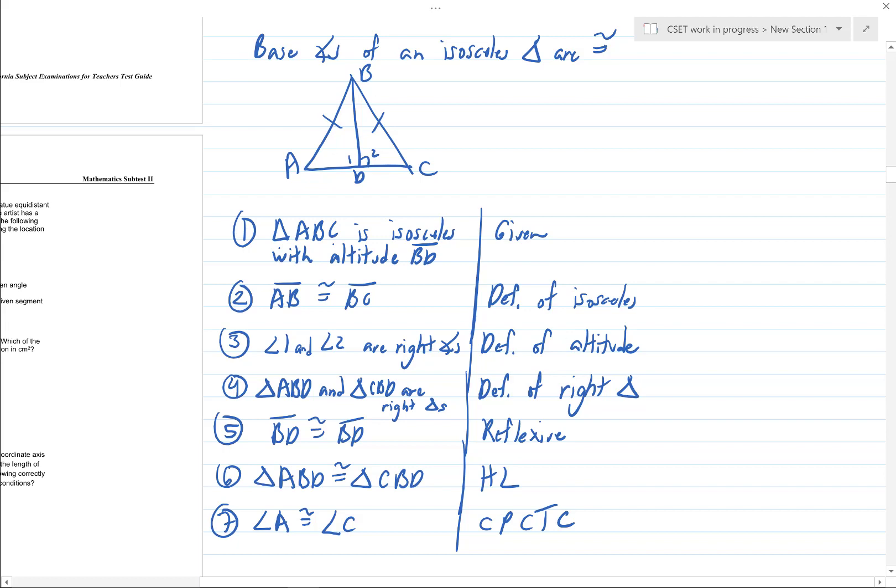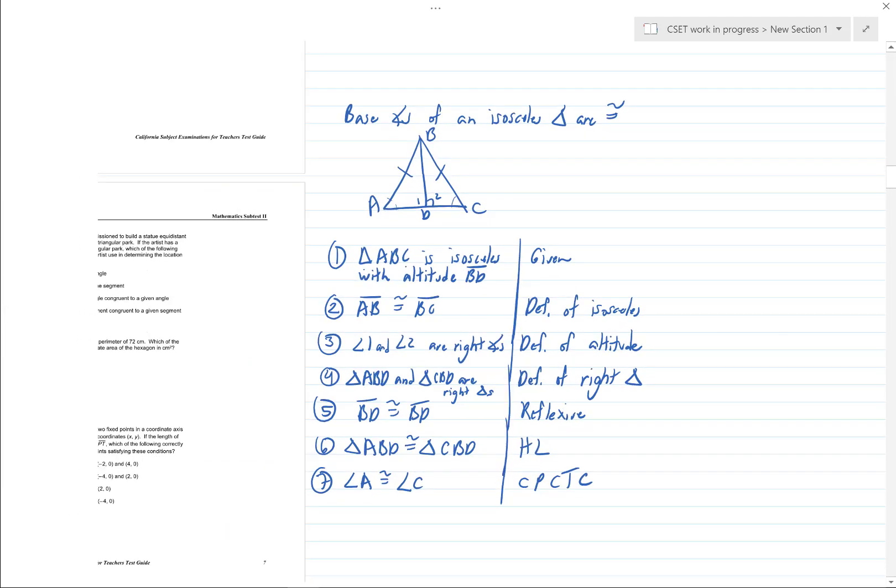And then you can say that those triangles are right triangles because they have right angles, and then you can prove the two triangles congruent by hypotenuse leg. And therefore all their pieces are congruent by corresponding parts of congruent triangles are congruent. So we proved the base angles of an isosceles triangle are congruent without touching parallel lines.